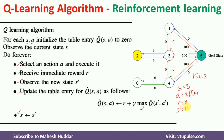Current state is 3, next state is 1, immediate reward is 0, action performed is 1. Plugging into the equation: Q-cap(3, 1) = 0 + 0.8 × max Q-cap(1, A') for all A'. From state 1, I can perform action 5 (reward 100) or action 3 (reward 0). The maximum is 100. So 100 × 0.8 = 80. Therefore Q-cap(3, 1) = 80.